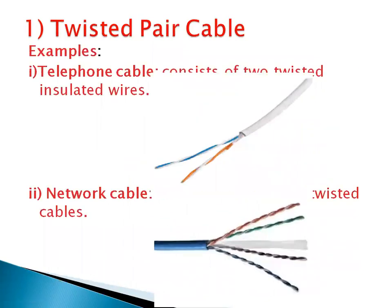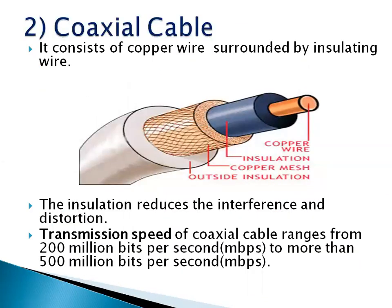Number 2: Coaxial cable. It consists of a copper wire surrounded by an insulating layer. In this figure, you can see the copper wire at the center, surrounded by insulation, then a copper mesh, a braided shield, and an outer insulation layer.